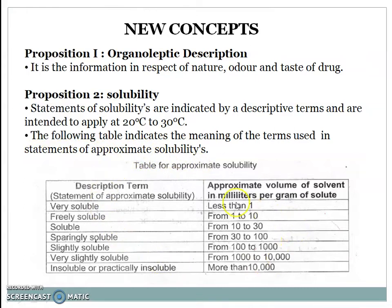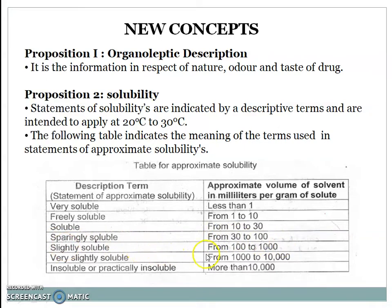The solubility table shows: Very soluble means soluble in less than 1 ml of solvent. Freely soluble means soluble in 1 to 10 ml. Soluble means 10 to 30 ml. Sparingly soluble means 30 to 100 ml. Slightly soluble means 100 to 1000 ml. Very slightly soluble means 1000 to 10,000 ml. Insoluble or practically insoluble requires more than 10,000 ml of solvent.